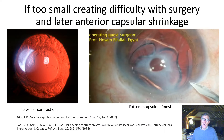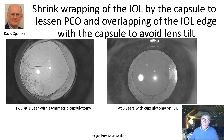If the capsulotomy is too small, it will create difficulty with surgery and there is a later risk of anterior capsular shrinkage. You can see how much the capsule has contracted on the left, and even more so on the right, so that we have a really small opening — capsular phimosis. Both of these have been reported in the literature, from Jim Gills and also from a group in Korea. Shrink wrapping of the IOL by the capsule to lessen PCO and the overlapping IOL edge will also avoid lens tilt.